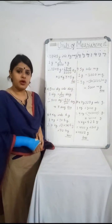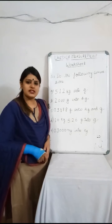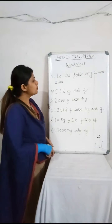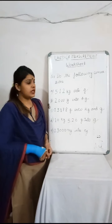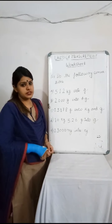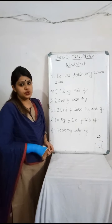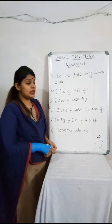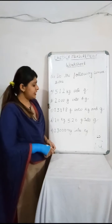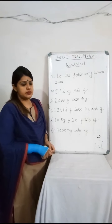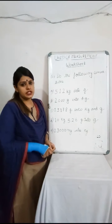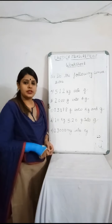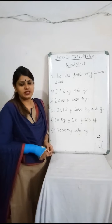Now we will move forward to today's worksheet — this is our second worksheet on units of measurement. Question 1: Do the following conversions. A. 512 kg into grams. B. 2000 grams into hectograms. C. 13,178 grams into kilograms and grams. D. 10 kg 526 grams into grams. E. 13,000 milligrams into centigrams. Please do these questions in your copy and we will meet you in the next video on measurements again. Thank you.